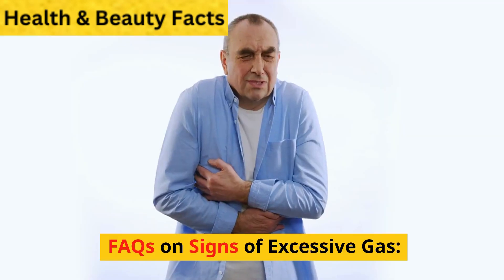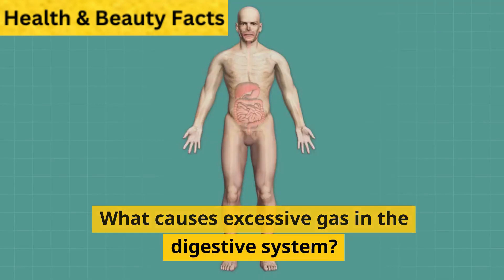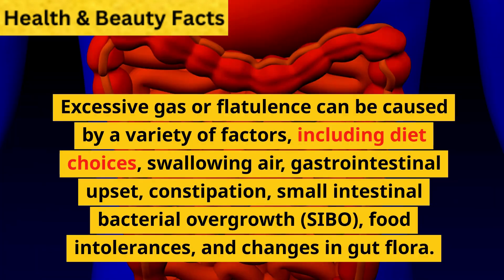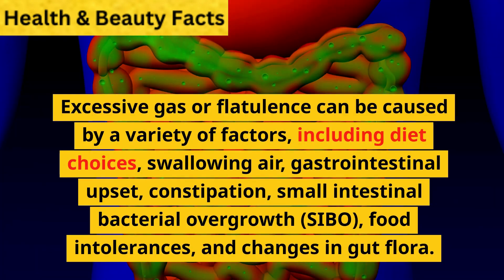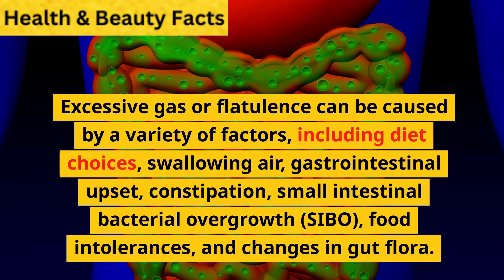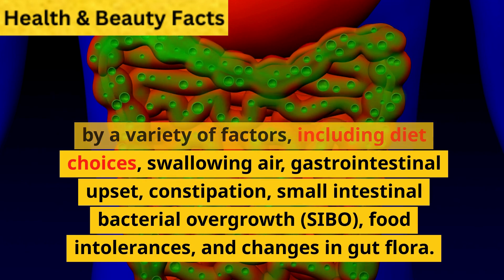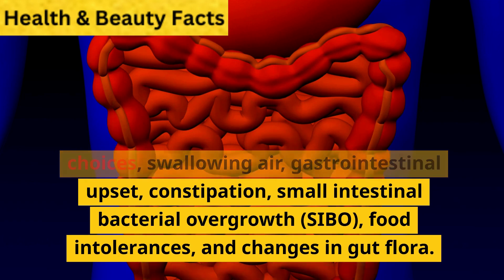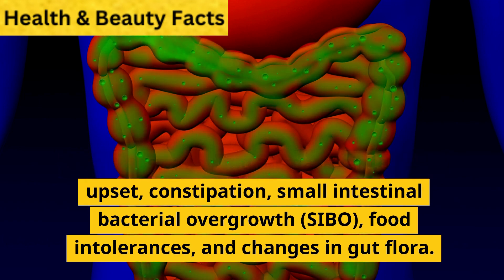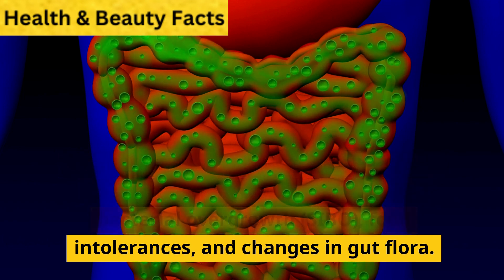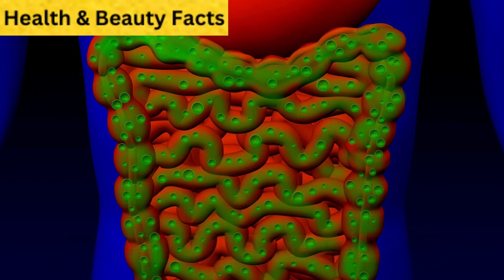FAQs on signs of excessive gas. What causes excessive gas in the digestive system? Excessive gas or flatulence can be caused by a variety of factors, including diet choices, swallowing air, gastrointestinal upset, constipation, small intestinal bacterial overgrowth (SIBO), food intolerances, and changes in gut flora.